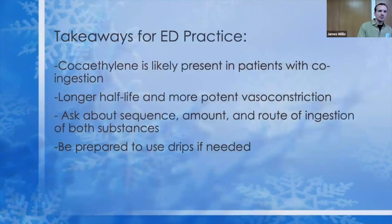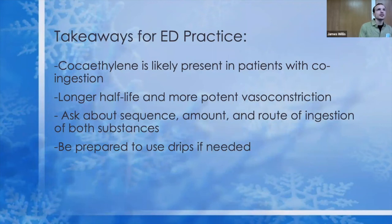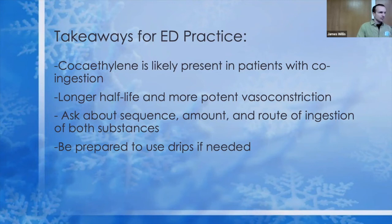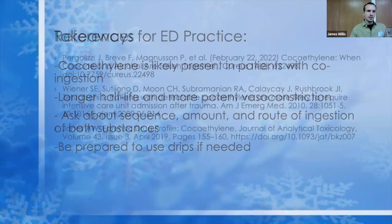Some takeaways for ED practice: Cocaethylene is probably present in any patient who is drinking and doing cocaine. It's important to be aware because it has a longer half-life and is a more potent vasoconstrictor, inotrope, and chronotrope. Ask your patients about the sequence, the amounts, and the route of ingestion of both alcohol and cocaine — it matters because if they drank after the cocaine, it's less likely to form cocaethylene. Consider the need for drips due to this longer half-life as needed.